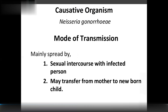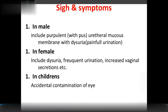Mode of transmission: mainly spread by sexual intercourse with an infected person, or may transfer from mother to newborn child. Signs and symptoms in males include urethral mucous membrane pus and dysuria — painful urination. In females: dysuria, frequent urination, and increased vaginal secretions.